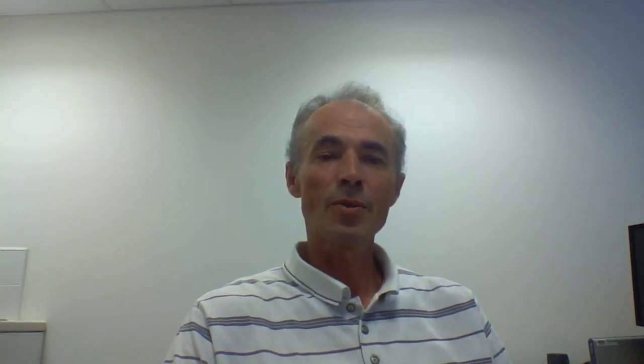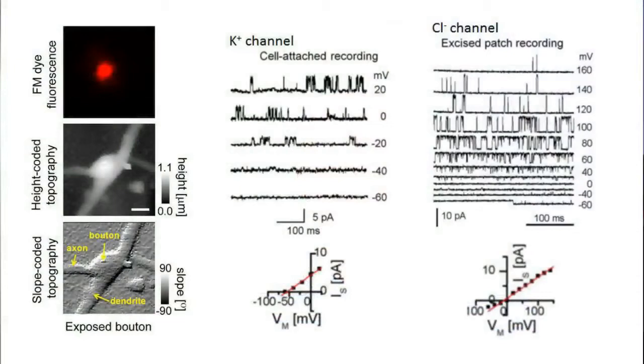The great advantage of combining scanning ion-conductance microscopy is that they share a similar probe, a glass nanopipette, which can be used to image the sample with high resolution, safely navigate the probe to the exposed area of the bouton and perform patch-clamp recording. In this way, we successfully can record single ion channels from the presynaptic membrane in cell-attached and excised patch configurations.